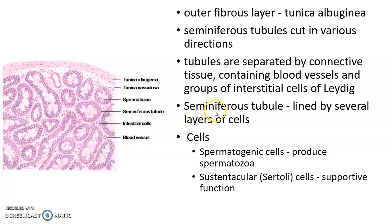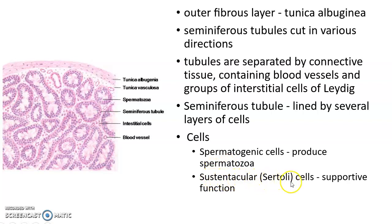The seminiferous tubules are lined by several layers of cells. The cells are of two types: spermatogenic cells, which produce spermatozoa, and sustentacular or Sertoli cells, which have a supportive function.